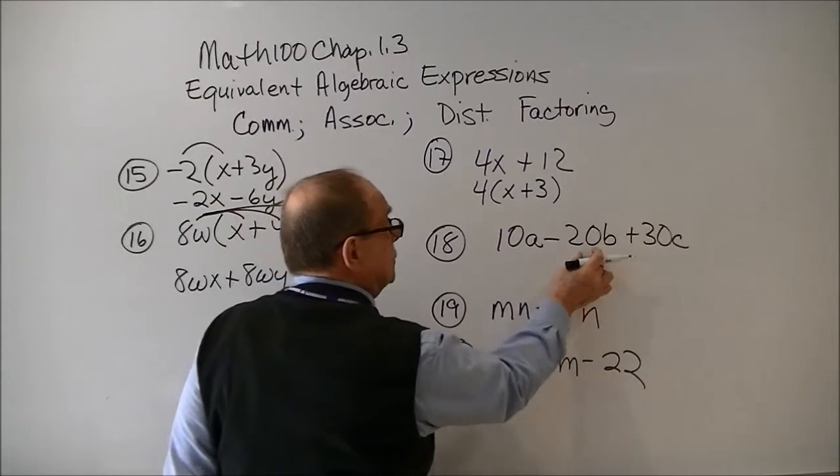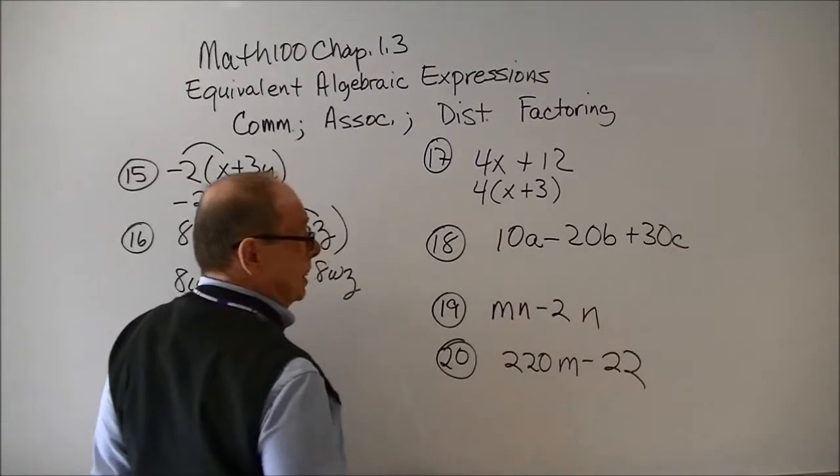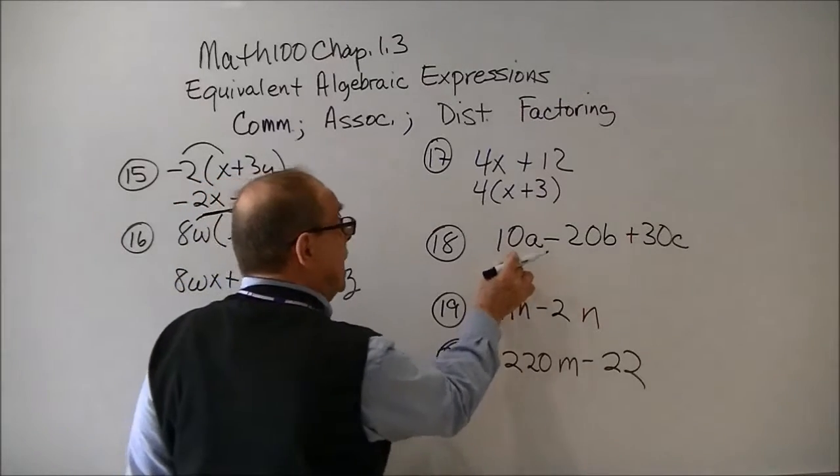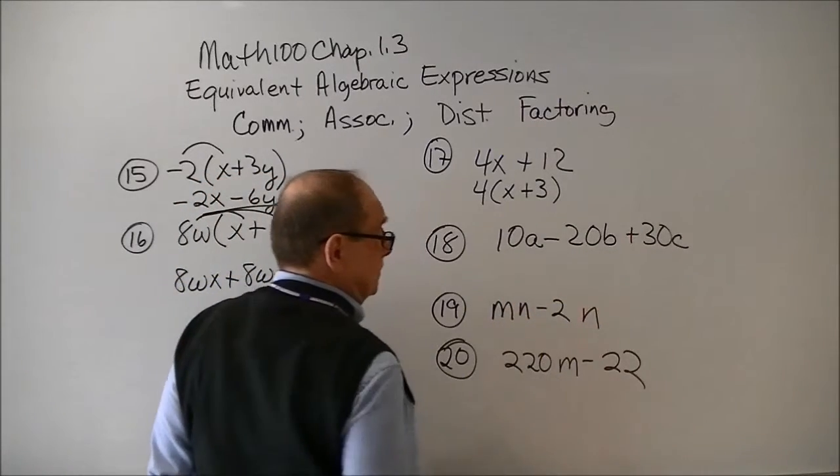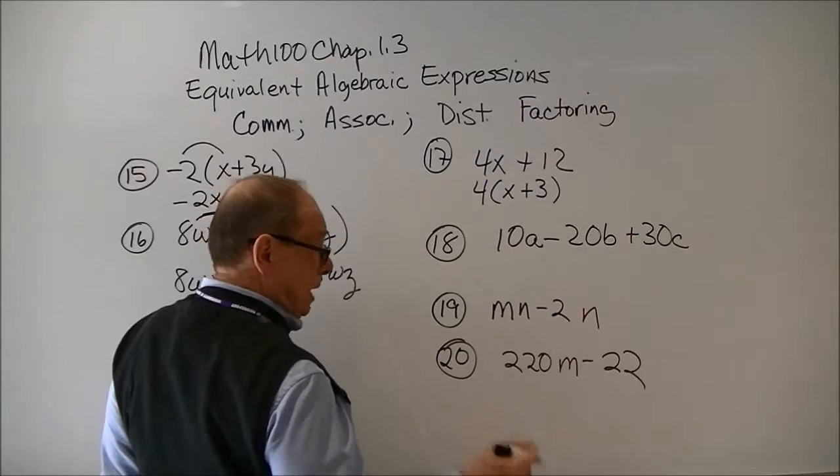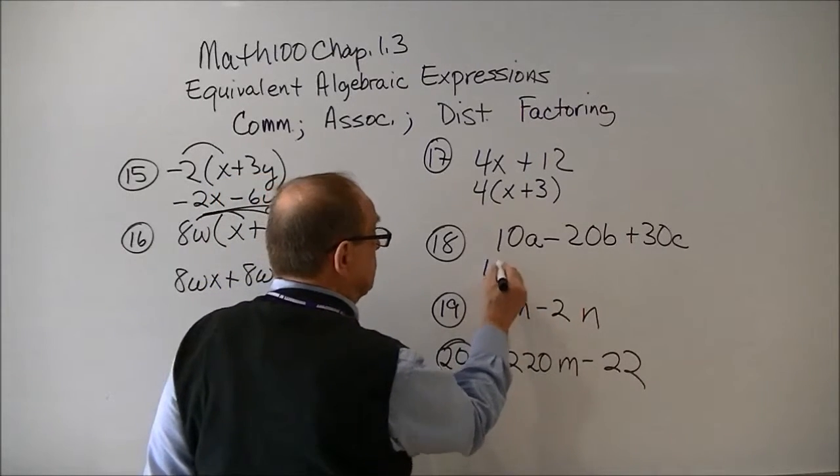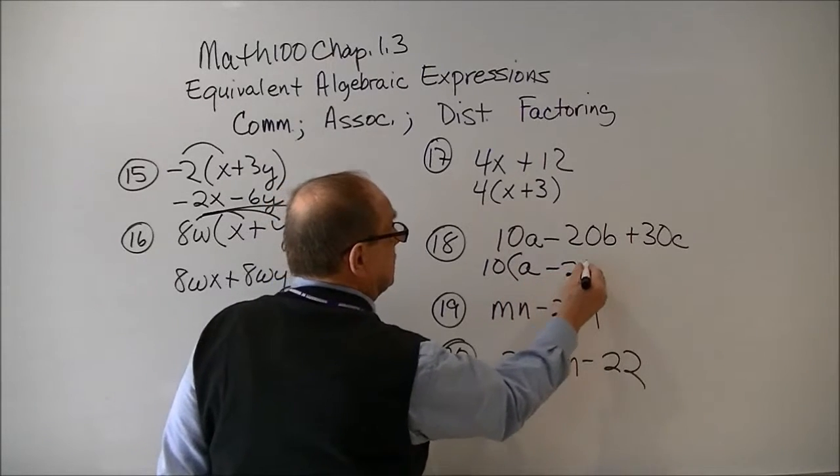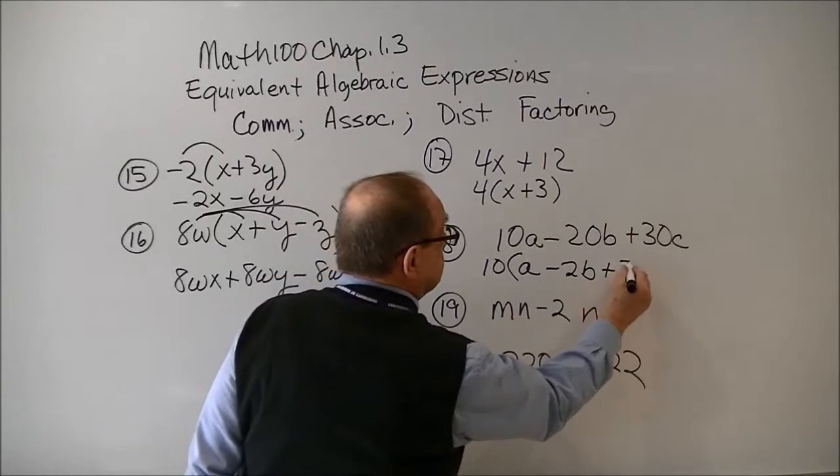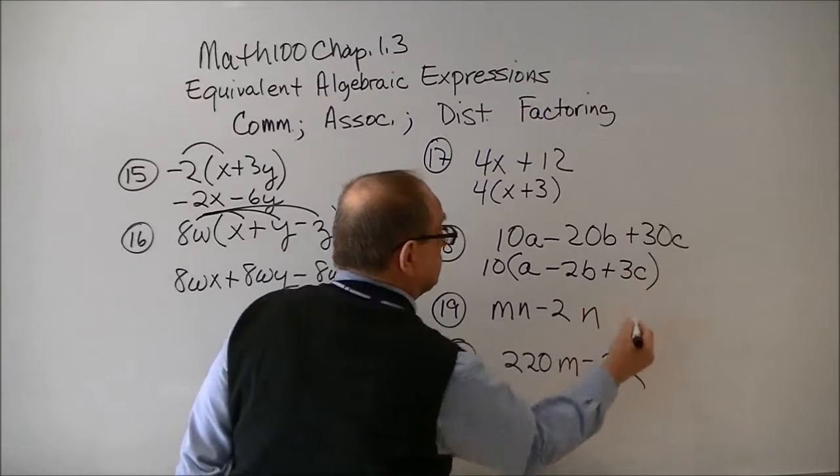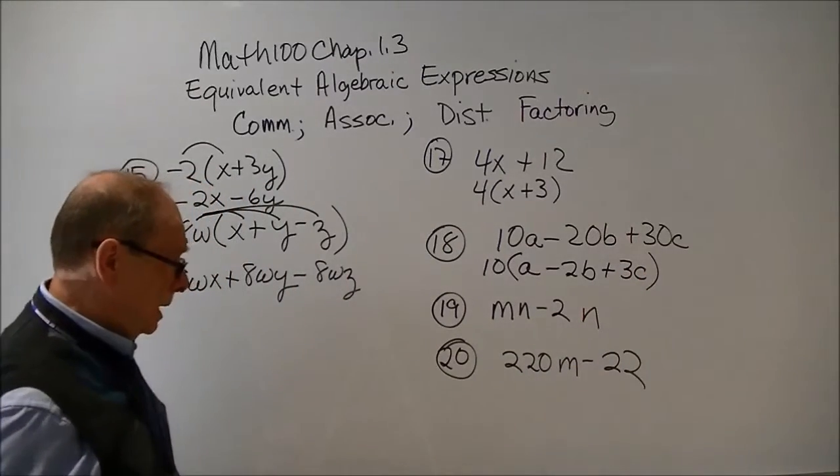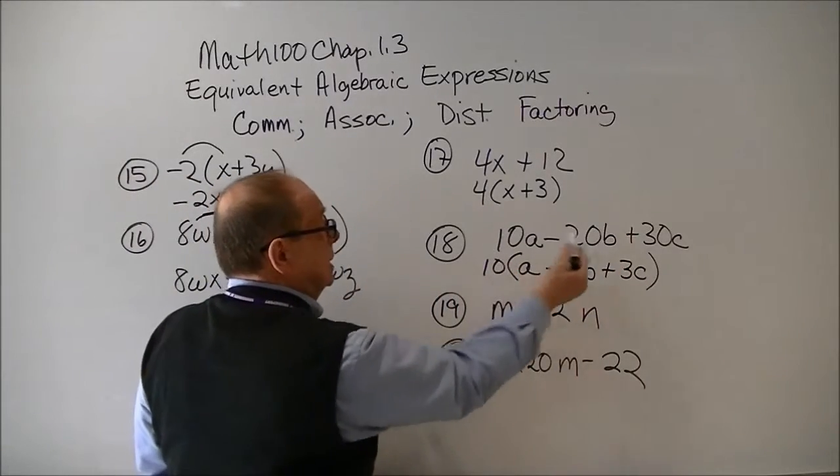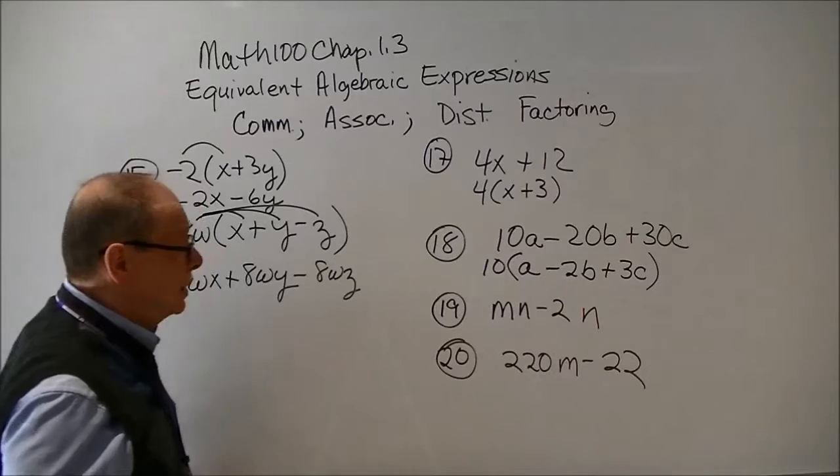Now notice, you could take a 2 out of each one, but that wouldn't be the greatest common factor. You could take a 5 out of each one. But the greatest common factor out of each one is 10, leaves you with an a. And you can always check by reversing what you've done to see if you get what you started with.